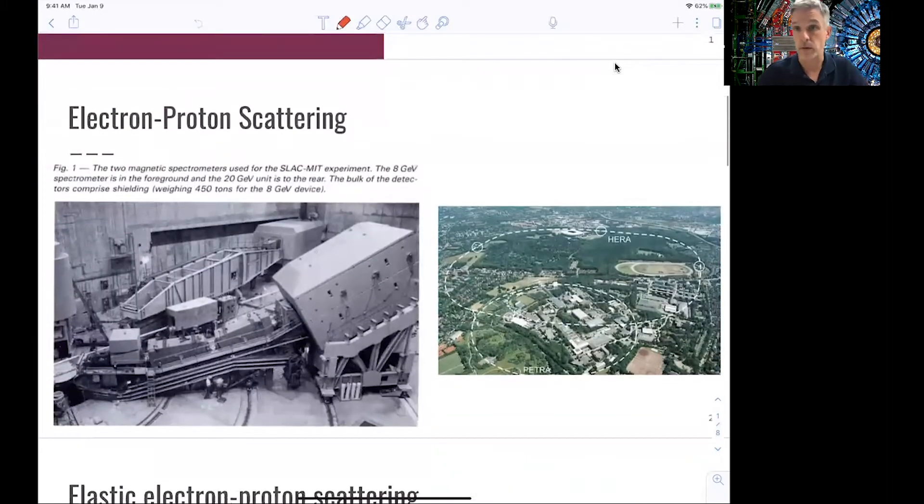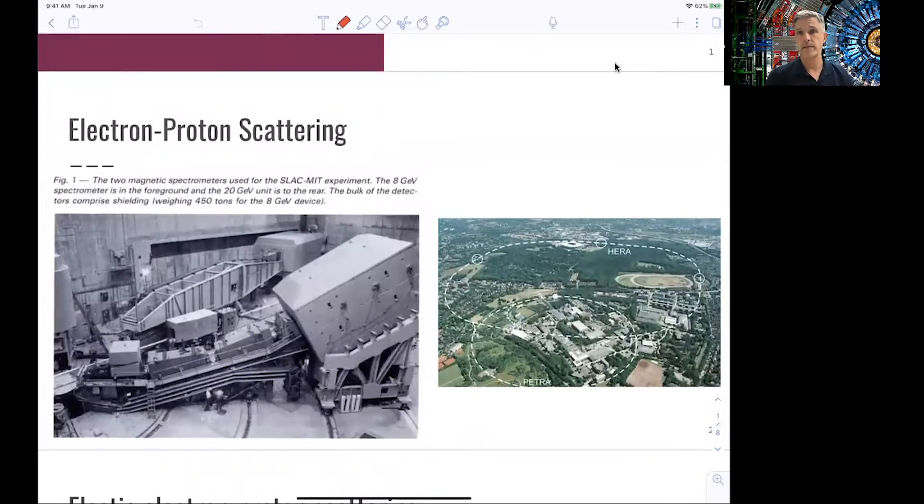Electron-proton scattering in general has a long history going back into the 1960s. Famous examples are the MIT SLAC or SLAC-MIT experiment, which led to the Nobel Prize in Physics for Jerry Friedman, Henry Kendall, and Richard Taylor in 1990. The most recent and highest energetic electron-positron experiments were conducted at DESY in Hamburg at the so-called HERA Ring.